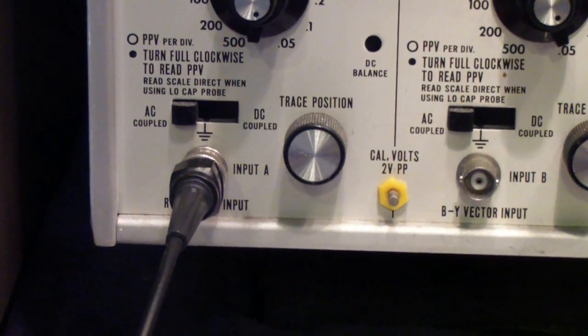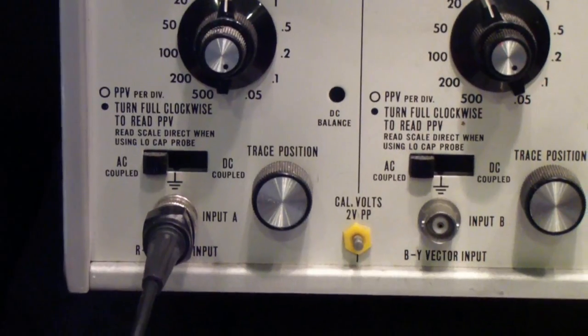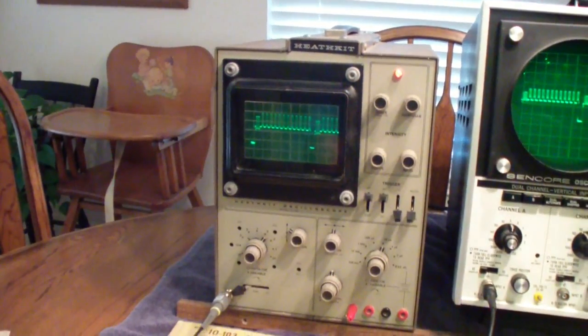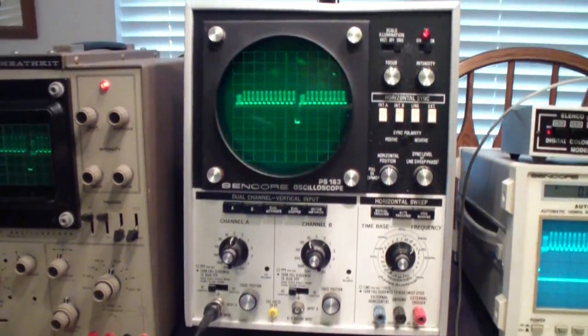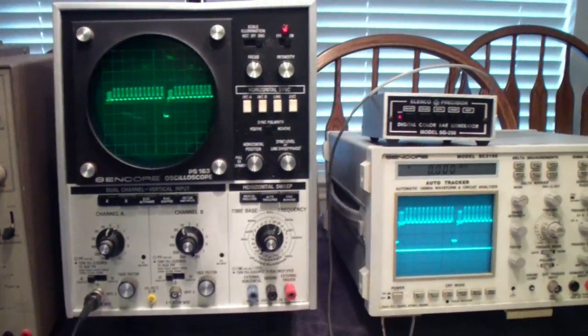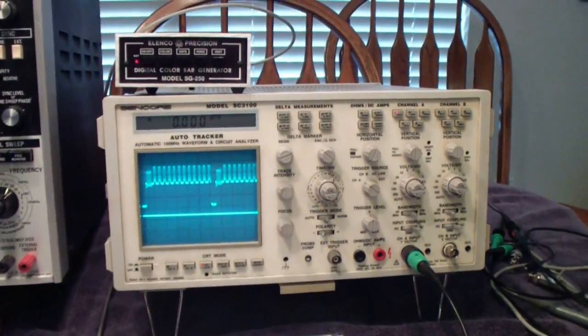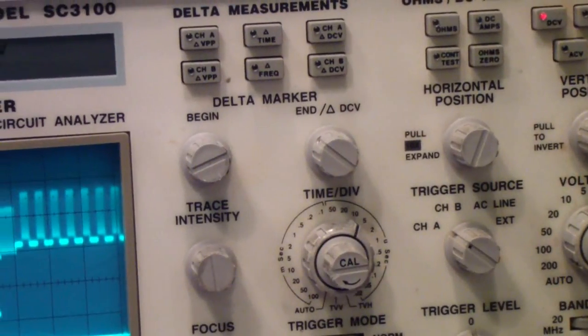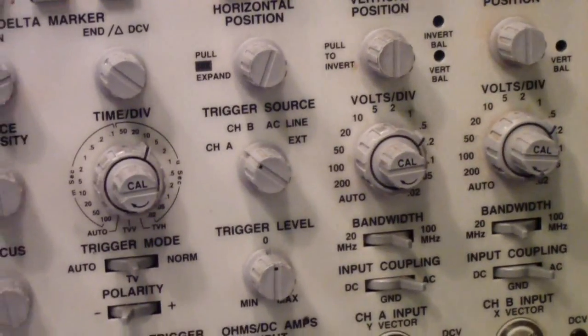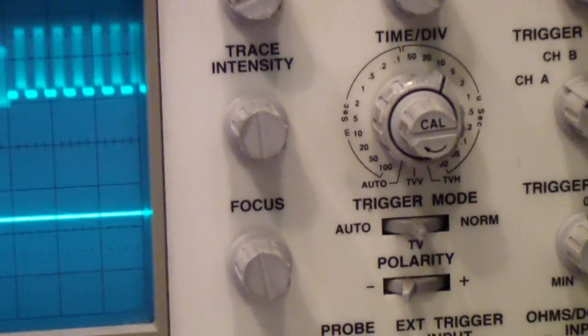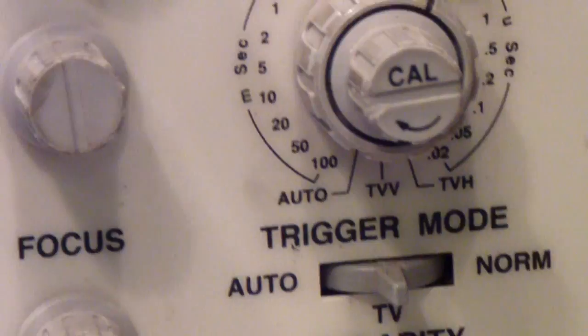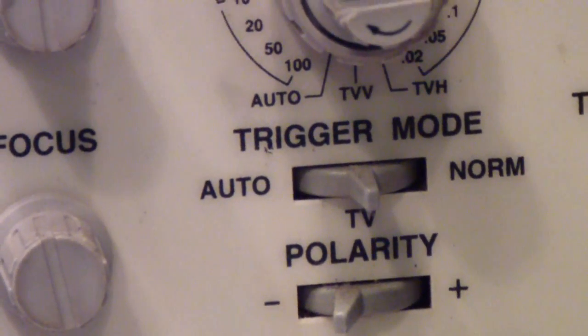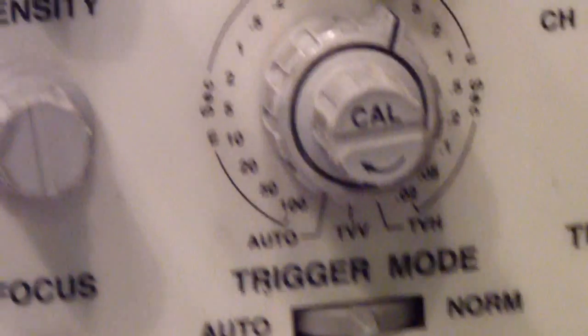Two channels began to be important. Later, when VCRs came out, they became very important because a lot of the adjustments in VCRs required that you trigger on one signal and adjust a second. The only one of these that I actually owned at the time was this Heathkit. I bought this PS-163 to complete a set of Sencore test equipment. Same way with this SC-3100.